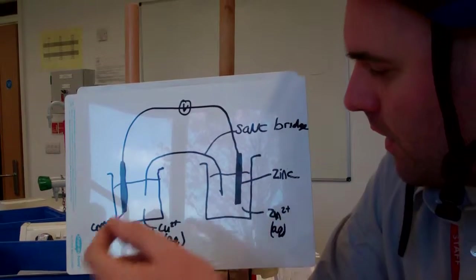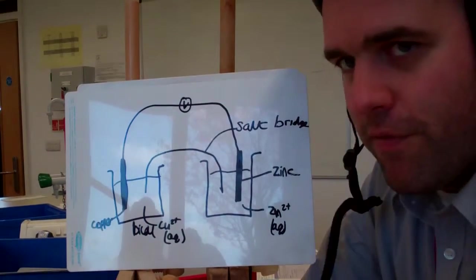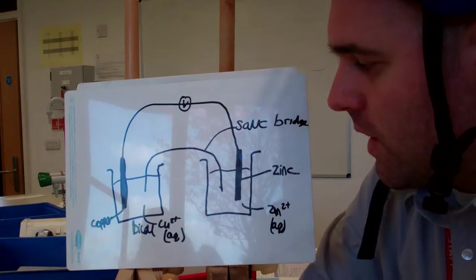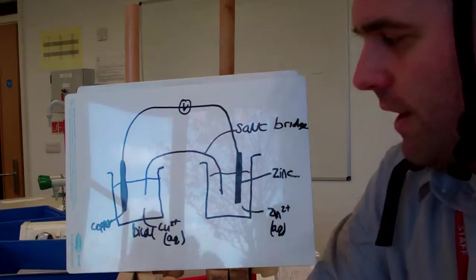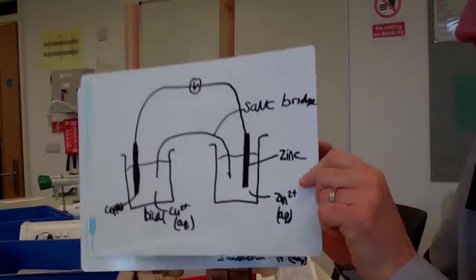Here we've got a zinc half cell, so it'll be zinc and zinc 2 plus. So if you have a solid metal in your half equation, you have to have that as your electrode. But sometimes you don't have that, so you have different setups.